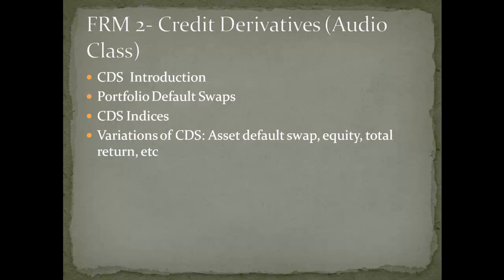To summarize: in a standard basket every missed default is covered; in Nth-to-default you are compensated only after a particular number of defaults; and in first-to-default you are compensated only for the first one. Similarly, a second-to-default basket provides a compensatory payment for the second default in the reference name with no payment for the first. This basket structure is especially interesting because of the important role correlation plays in pricing the CDS spread. If two credit events are highly correlated — for example due to exposure to the same macro or industry factor — a default in one credit is likely to be followed by a default in the other, making the basket payoff more likely than if the credit events were independent.